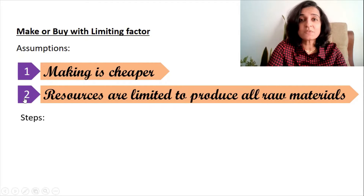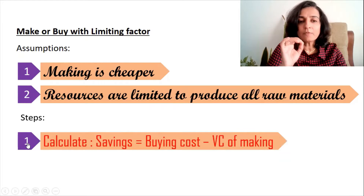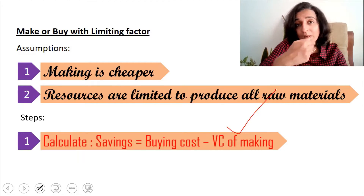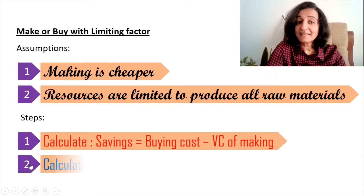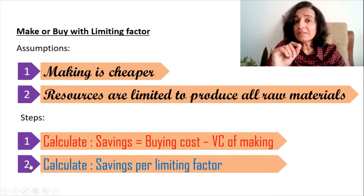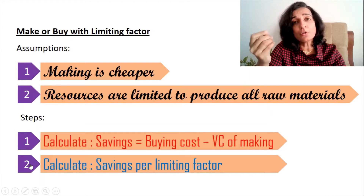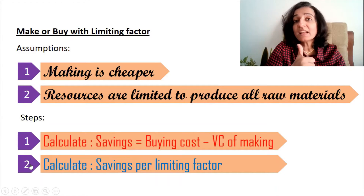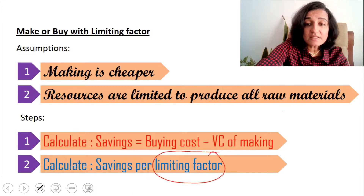There are mainly two steps involved. First, we have to calculate savings. We know that making is cheaper, so the variable cost of making will be lesser than the buying cost. The second step is to calculate savings per limiting factor. The limiting factor can be quantity in kg, machine hours, or labor hours. In this particular case, it is labor hours which is limited, so we should calculate the savings per labor hour.